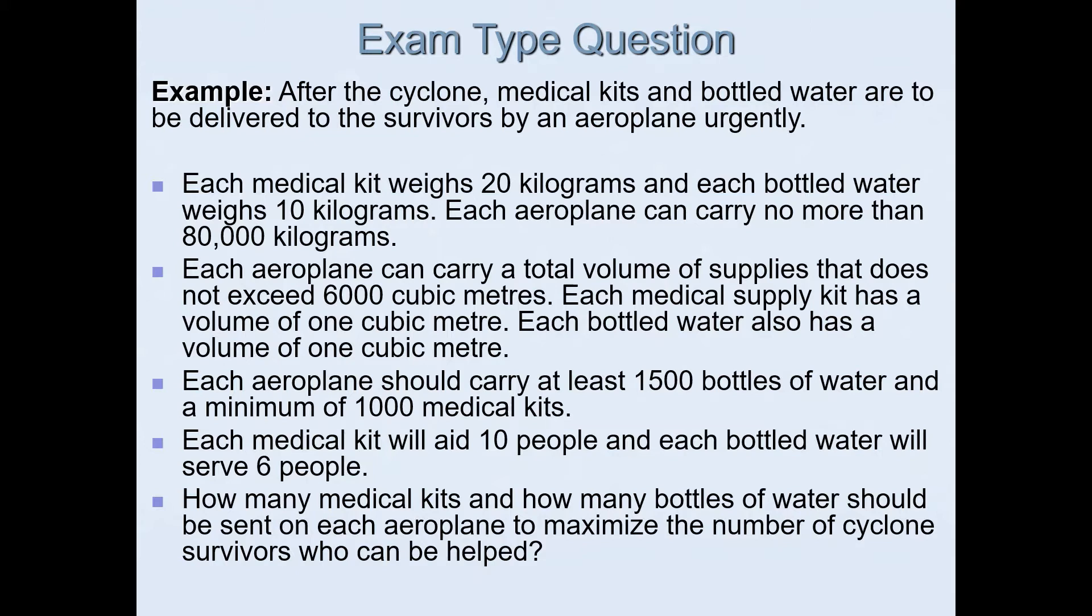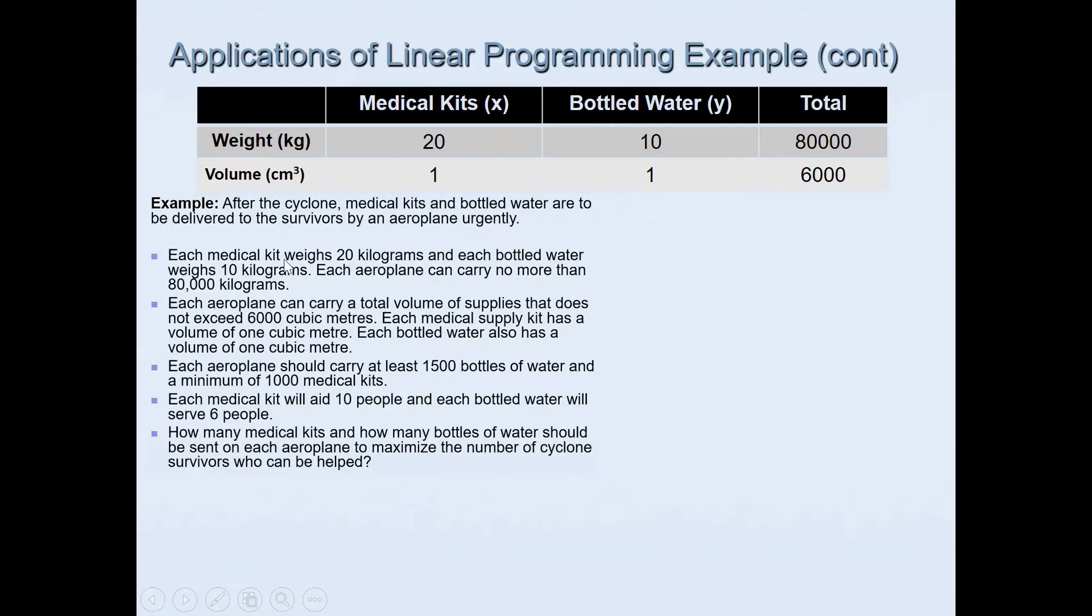Your assessment will be similar to this. What you need to do is identify the key phrases and use the inequalities that go with those key phrases and form inequalities. Once you form the equations, then you will graph them and find the feasible region and then see which one gives the maximum number of survivors who can be helped. If you can decipher the information given in context and create a table, this will assist you in forming the equations.